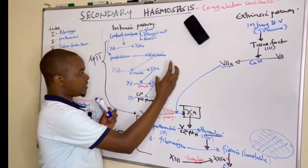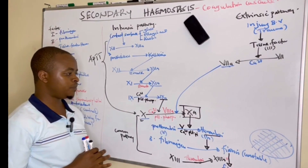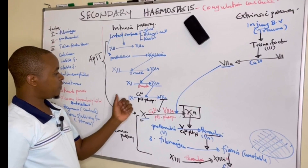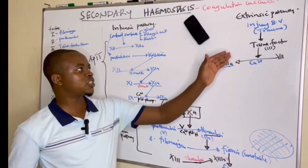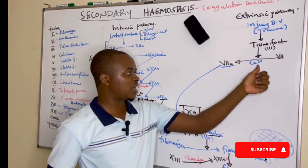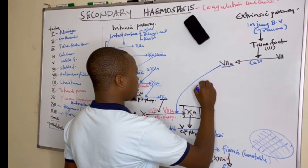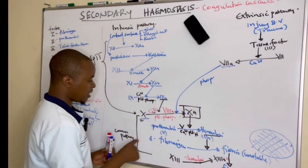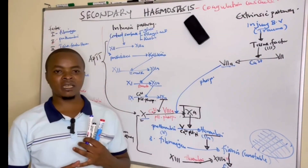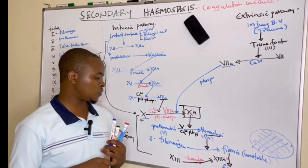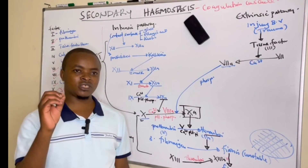Activated factor seven meets the intrinsic pathway at the common pathway, which is factor ten. Under the extrinsic pathway, factor ten is activated by activated factor seven together with calcium and phospholipids. So activated factor seven in the presence of phospholipids converts inactive factor ten to activated factor ten. They then join the common pathway: conversion of prothrombin to thrombin, followed by conversion of fibrinogen to fibrin — unstable, then stabilized by factor thirteen to form a stable mesh that stops blood from clotting.